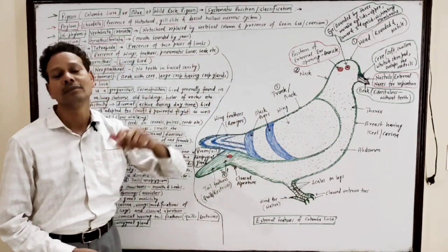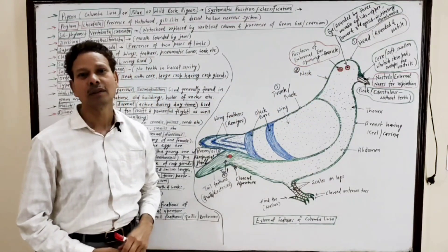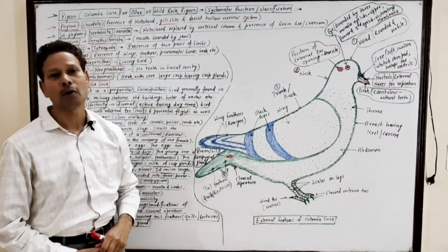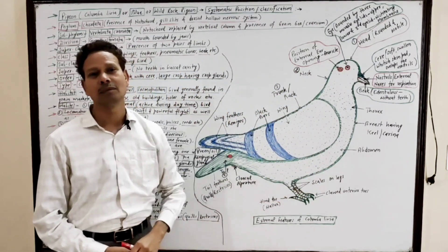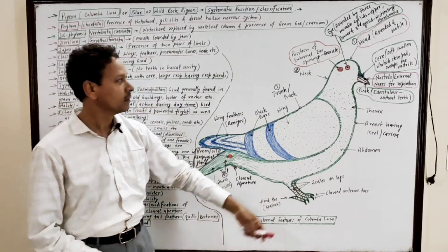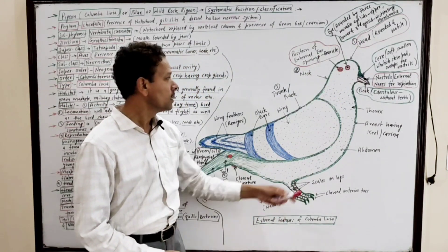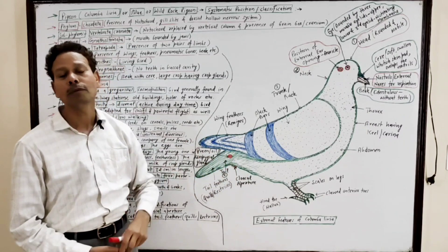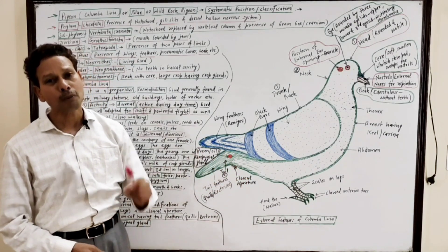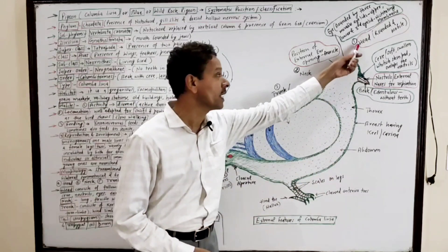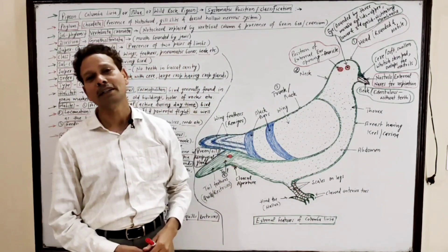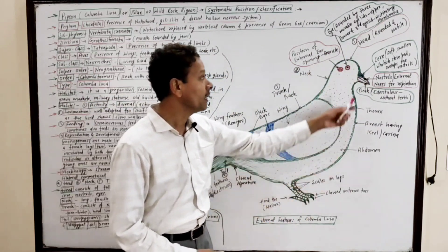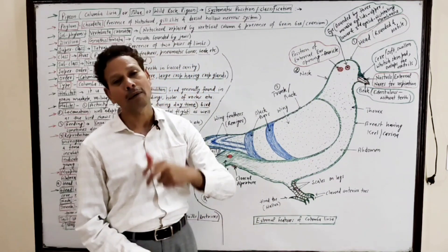External morphology. The body of the pigeon is streamlined, it is bilaterally symmetrical. The entire body of pigeon is divided into four parts: one is head, second part is neck, third one is back or trunk, and the last part is tail. The pigeon body's first part is head which is small, rounded, mobile in nature showing great mobility. This head possesses following structures.